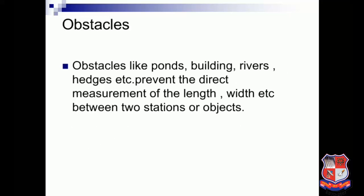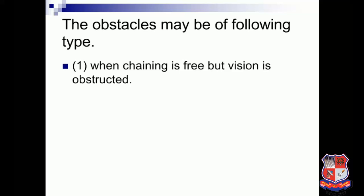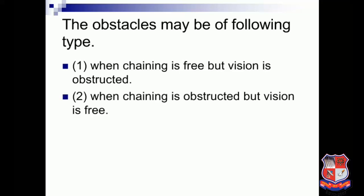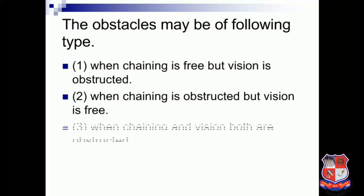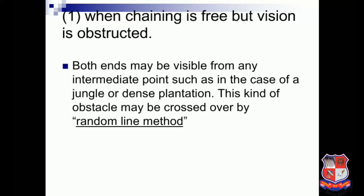Obstacles such as ponds, buildings, rivers, and hedges prevent the direct measurement of length or width between two points. Obstacles may be of the following types: when the chaining is free but vision is obstructed; when the chaining is obstructed but vision is free; and when both chaining and vision are obstructed. When the chaining is free but vision is obstructed — as in the case of a jungle or dense plantation — this can be crossed using the random line method.